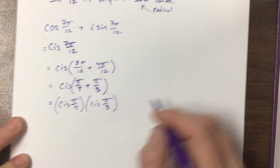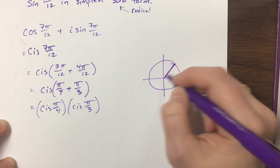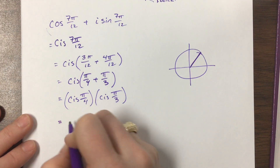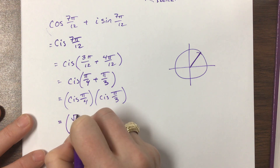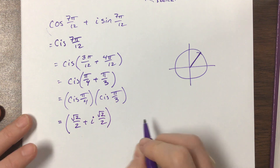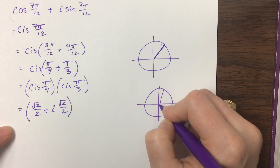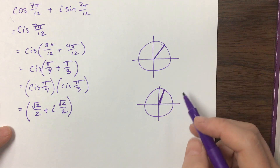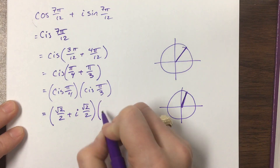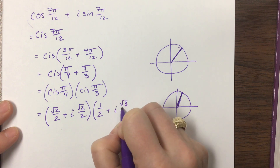If you think about where π/4 is on the unit circle, it gives us (√2/2, √2/2), so the real part is √2/2 and the imaginary part is also √2/2. For π/3, the real part is 1/2 and the imaginary part is √3/2. See how important it is to know your unit circle!